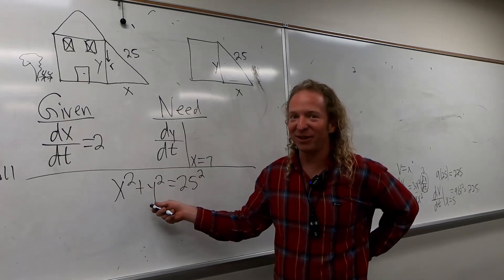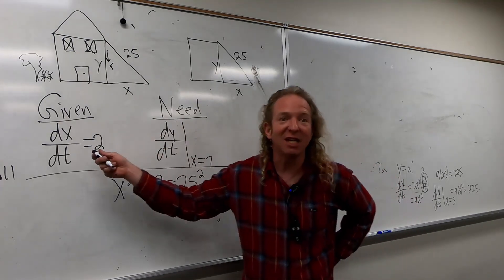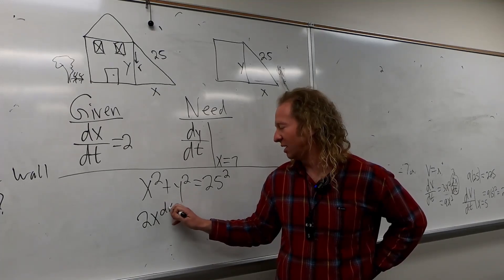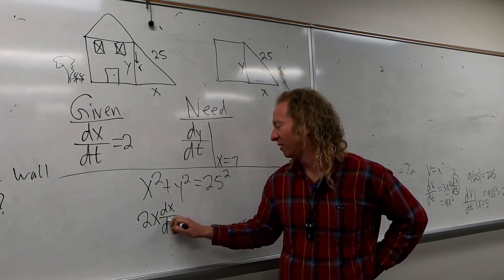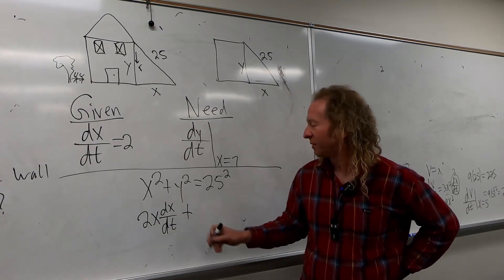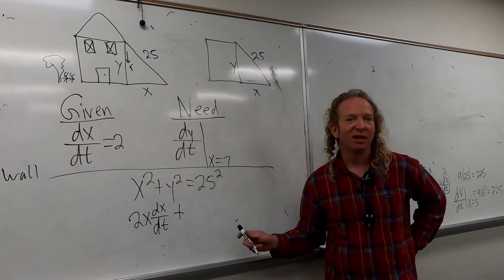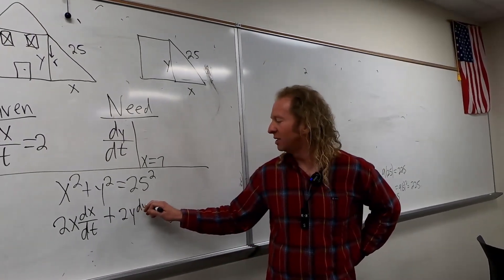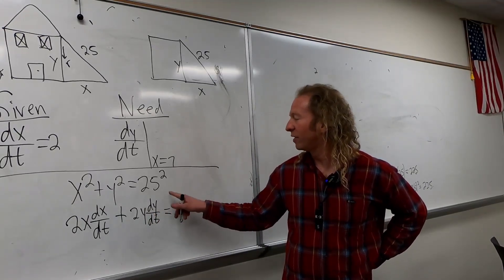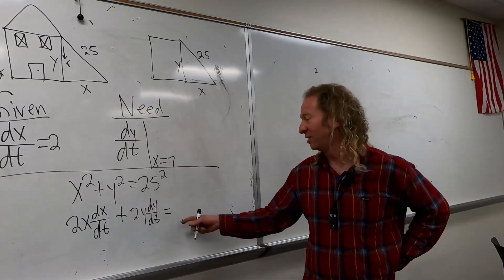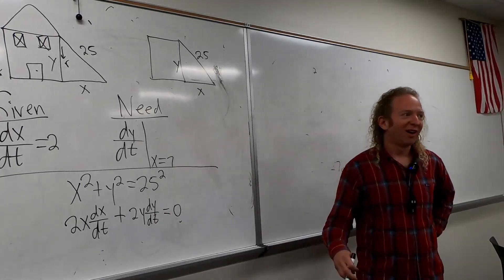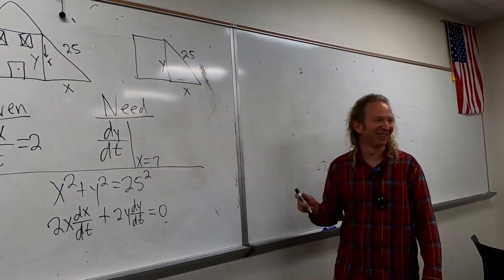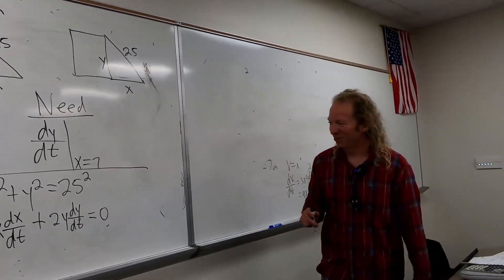So now we're going to take the derivative with respect to T. So it'll be 2x dx/dt. Haven't done this in a while. Plus, right, with respect to T, 2y dy/dt. Very good. And what's the derivative of 25 squared? Zero. Very good. It's a number. I was waiting for someone to say, put the two in the front and subtract one. No, it's just a number.